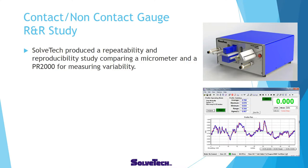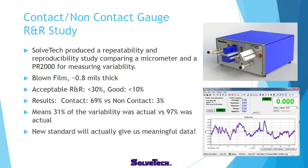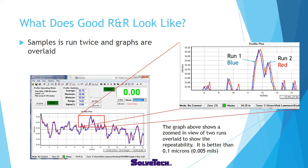Here's an R&R study we did comparing repeatability and reproducibility of a micrometer versus a PR2000. We used a blown film that is 0.8 mm thick or about 20 microns thick. Acceptable R&R is less than 30%; good is less than 10%. The results: contact had an R&R of 69% versus non-contact at 3%. So the non-contact device proved to have excellent R&R while the contact had an unacceptably high R&R. We can also visualize R&R by overlaying two back-to-back graphs — the first run in blue and the second run in red — and you can see how closely they match on the exact same sample.